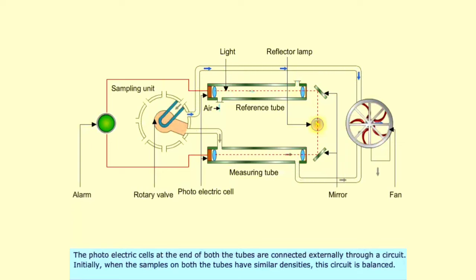The photoelectric cells at the end of both tubes are connected externally through a circuit. Initially, when the samples on both tubes have similar densities, this circuit is balanced.